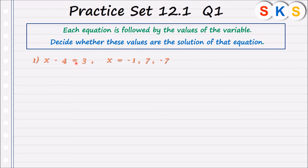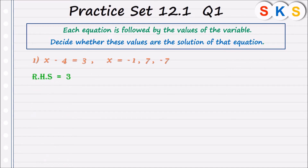Whatever comes before the equals sign is called the left hand side, and whatever comes after is called the right hand side. So the right hand side of this equation is 3.